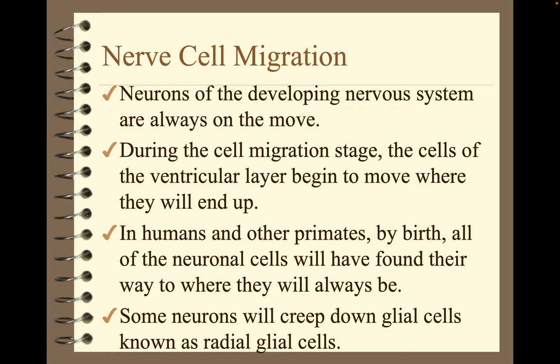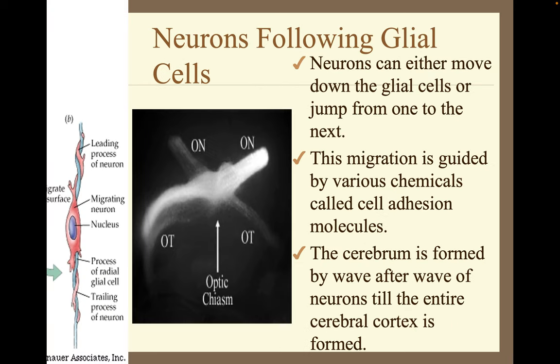During the cell migration stage, the cells of the ventricular layer begin to move to where they will end up. In humans and other primates, by birth all the neuronal cells will have found their way to where they will always be. Some neurons creep down glial cells known as radial glial cells, and neurons can either move down the glial cells or jump from one to the next. This migration is guided by various chemicals called cell adhesion molecules.